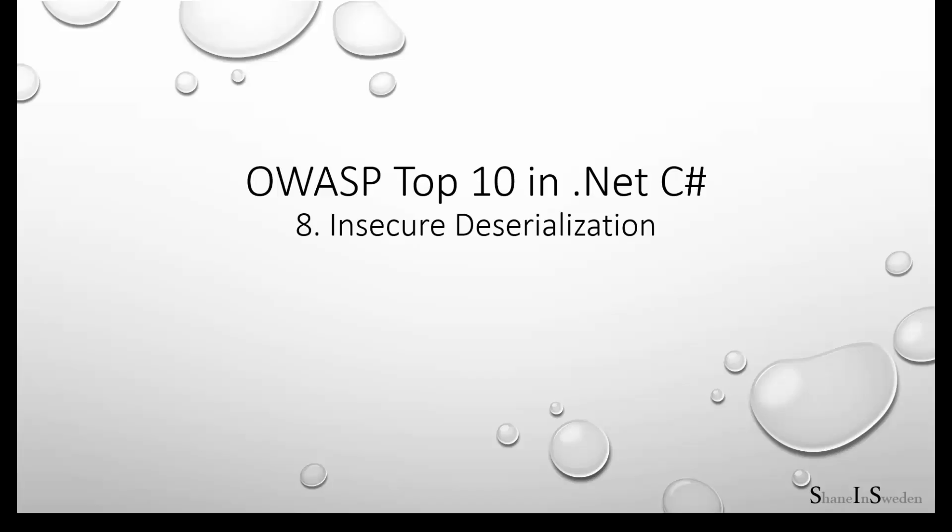Hello, I'm Shane in Sweden, and in this series of presentations we're looking at the OWASP Top 10 threat list from 2017. In each of our presentations we will look at one particular threat, describe the problem, and give specific C# examples of the threat in practice. We will then look at mitigations and safeguards we can use when developing in C# to reduce the risks from this threat.